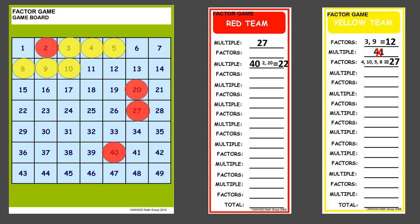The game continues with players covering up multiples and factors on the game board until they get a final total score, which they write down. They are not trying to get numbers in a row — they're just trying to cover counters on the board. If a player covers a multiple whose factors are already covered by the other team, that's simply to the disadvantage of that team.